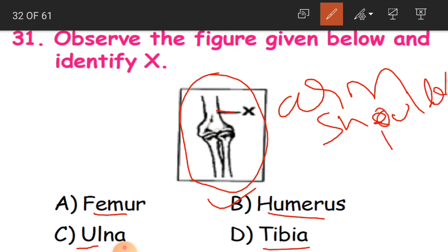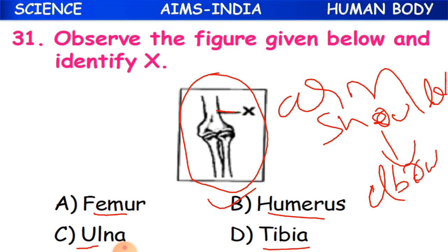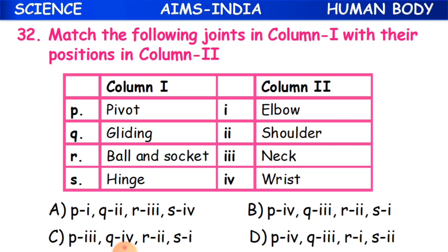The humerus runs from the shoulder to the elbow. So we call it the humerus. Now Question 32: Match the following joints in column one with their positions in column two.